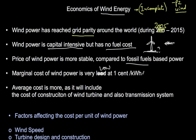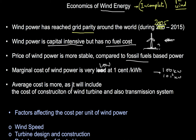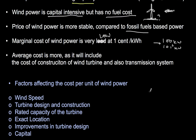The marginal cost of wind power is about one cent per kilowatt hour - almost negligible. Marginal cost means: if you are already generating 100 kilowatts, how much will it cost to generate that 101st kilowatt? That additional kilowatt costs about one cent per kilowatt hour - quite low. The average cost is more, as it includes the cost of constructing the wind turbine and transmission system, so it also factors in fixed costs.